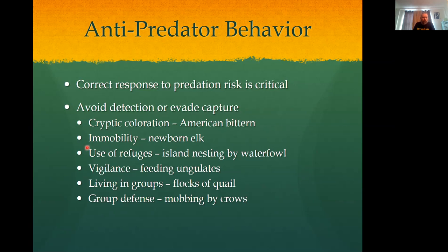They can avoid capture by going immobile. If you've ever startled a deer, particularly a young-of-year deer — a fawn — they stand still and freeze up. The idea is that if they don't move, they're less likely to be seen. We talked about vision being important for mammalian predators and birds — a lot of what they're looking for is movement, so if you don't move, you might not be seen.